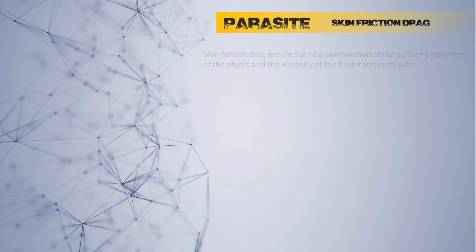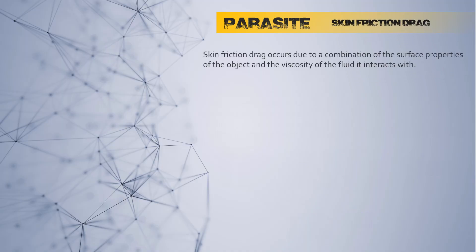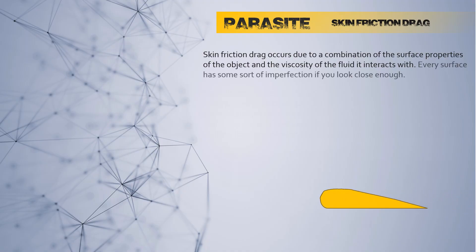Skin friction drag occurs due to a combination of the surface properties of an object and the viscosity of the fluid it interacts with. Every surface has some sort of imperfection if you look close enough.